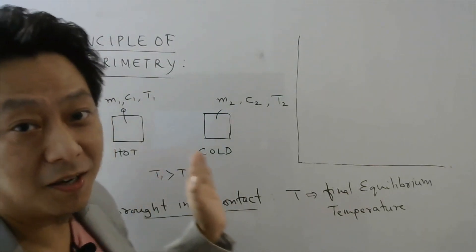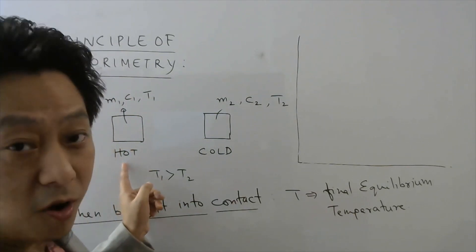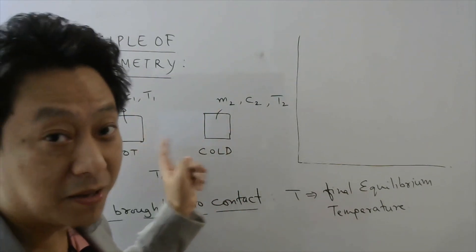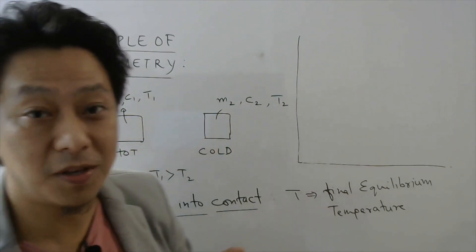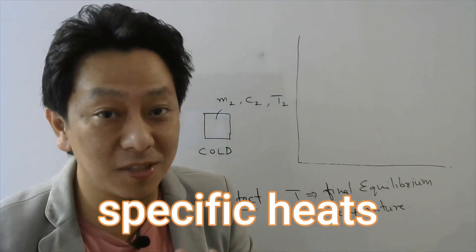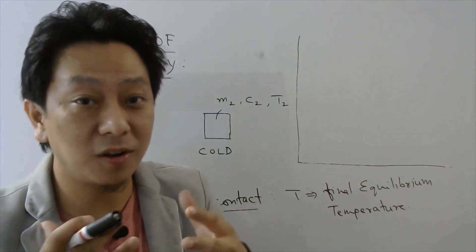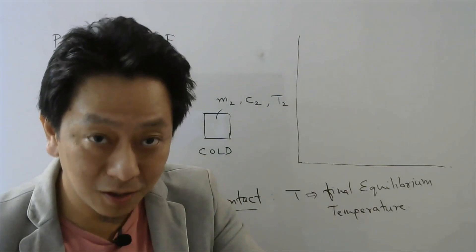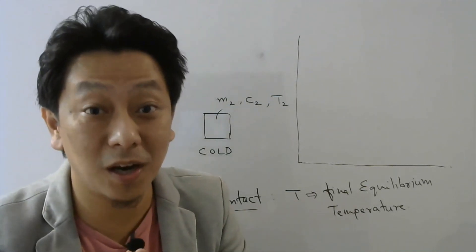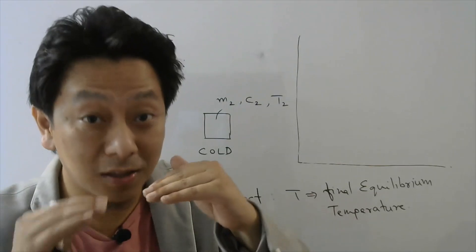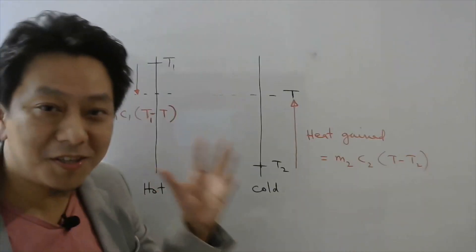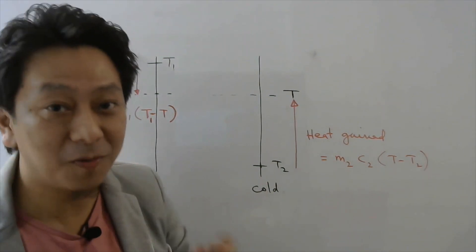Let us consider two bodies: one hot and one cold. The temperature of the hot body is t1, which is greater than temperature t2 of the cold body. m1 and m2 represent the masses of the two bodies, and c1 and c2 represent their specific heats. When they are brought in contact, the hot body will lose heat to the cold body and the cold body will gain heat until they reach thermal equilibrium.